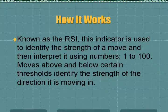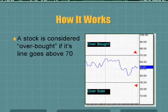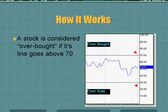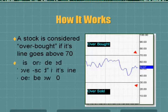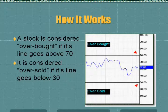This is very, very powerful for us. Here is how it works. A stock is considered overbought if its line goes above 70. Then it is considered oversold if the line goes below 30. So we can see whether it's overbought or oversold by whether it goes over those lines.